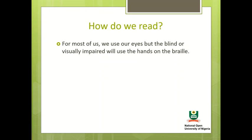How do we read? For most of us, we use our eyes, but the blind or visually impaired will use their hands on the Braille. The Braille is a system of printing in which the letters of the alphabet and numbers are printed as raised dots that can be read with the fingers by people who are blind or partially sighted.